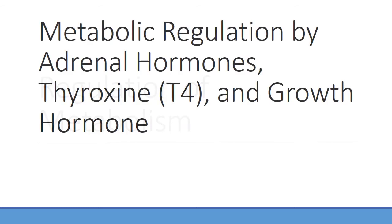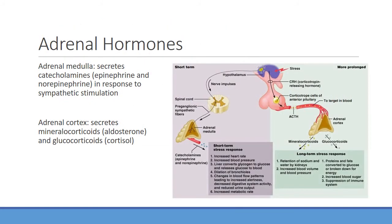Next we'll talk about regulation of metabolism. Looking at adrenal hormones: from the adrenal medulla, mostly catecholamines like epinephrine are secreted in response to sympathetic stimulation — fight or flight responses. These produce short-term stress responses: increasing heart rate and blood pressure, converting glycogen to glucose in the liver to increase blood glucose for energy. This causes a short-term lift in metabolic rate — you become hyperthermic, muscles work more, increased metabolism occurs.